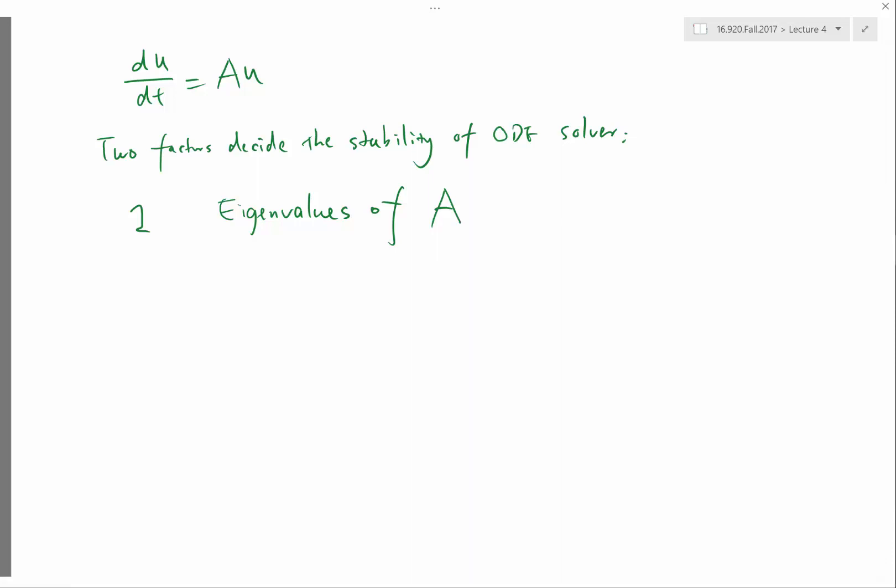Let me just make a more simplified case. Let me just think you have a scalar ODE, just du/dt equal to lambda u, where u is a single number, lambda is a single number. So one is the value of lambda times the delta t, where delta t is the time step size you are using.